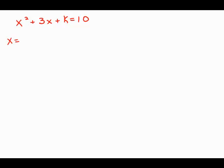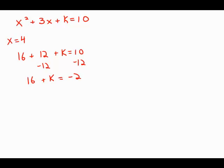We know that one of the roots is x equals 4. So the first thing I'm going to do is plug that in and solve for k. So 4 squared is 16, plus 3 times 4 is 12, plus k equals 10. Subtract 12 from both sides, we get 16 plus k equals negative 2. Subtract 16 from both sides, we get k equals negative 18.